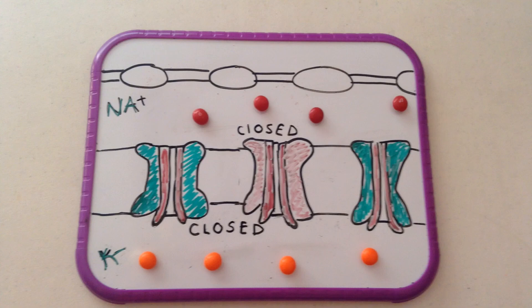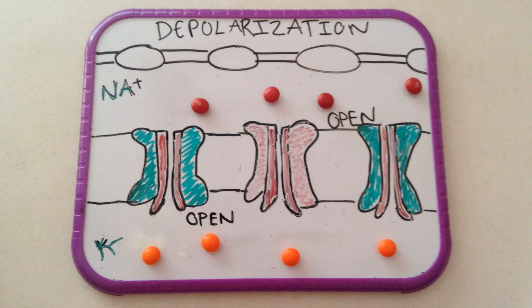When the cell membrane is at resting potential, both sodium and potassium channels are closed, and the inactivation gates are open. After depolarization begins, this makes the membrane potential more positive, which will cause voltage-gated sodium channels to open.